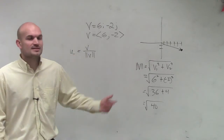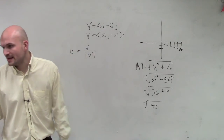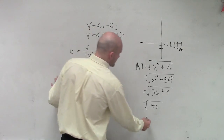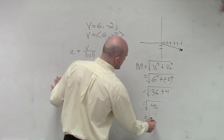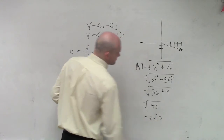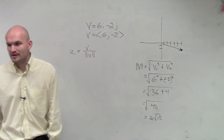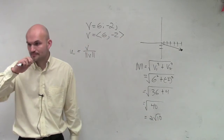That equals the square root of 40. Let's see if we can simplify that. The square root of 40 we can reduce down to 2 square root of 10. Remember all that practice on simplifying radicals?